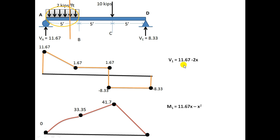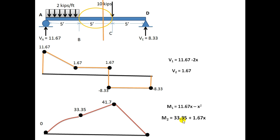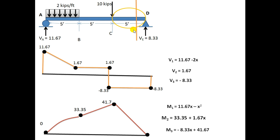The shear force equation V1 and moment equation M1 apply only to the first region. V2 and M2 are the equations for the second region — you get the shear and moment values for that region from these equations. V3 and M3 are the shear force and moment equations for the third region. Apply each pair of equations only within their respective region to draw the SFD and BMD. You can practice this example on your own, and for any queries you can comment below.